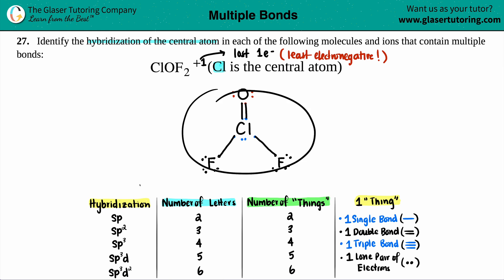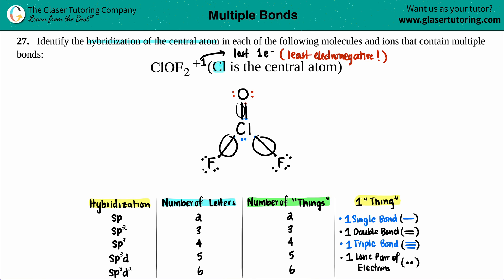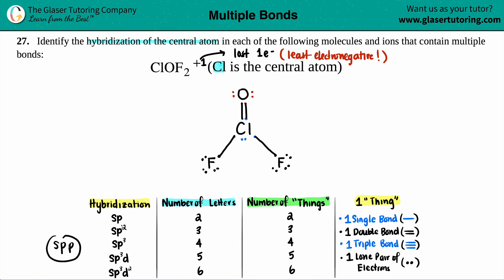Now that we have the Lewis structure, we can find the hybridization. Hybridization is about the orbitals that overlap to form sigma bonds in the bonds surrounding the atom — in this case, chlorine. The hybridization is linked to how many letters are in the hybridization notation: sp3 has one s and three p's, a total of four letters; sp2 has three letters; and sp has two letters.